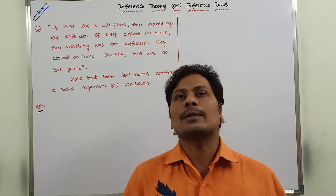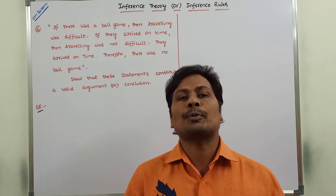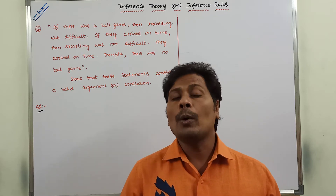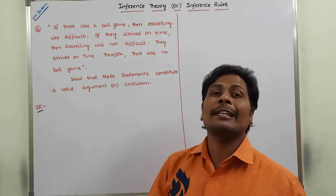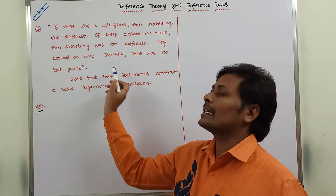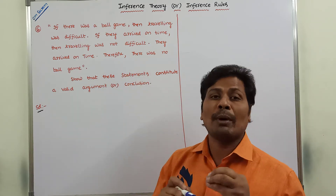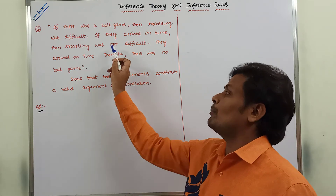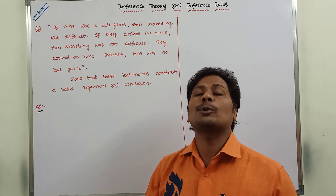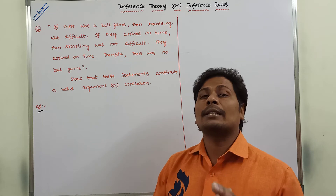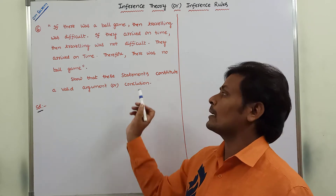In the previous videos, they are given the premises. From those premises, we have to check whether the premises produce a valid conclusion or not. Now, in this video, we have to solve a different problem. In that different problem, they are given different statements. First, these statements can be represented by using capital letters P, Q, R, S. Once we represent those statements by using capital letters, then the statements can be represented in symbolic form. Then, we get the premises. From those premises, we have to derive the given conclusion and check whether the conclusion is valid or not.